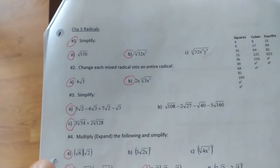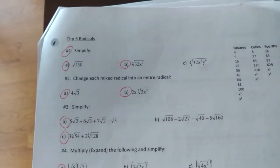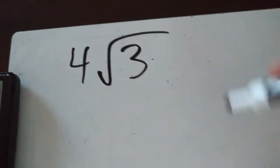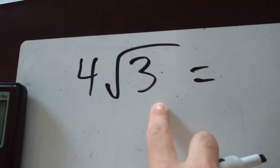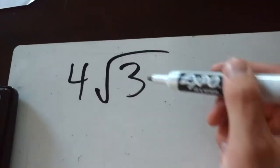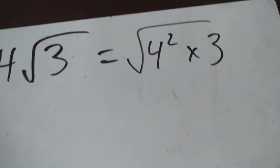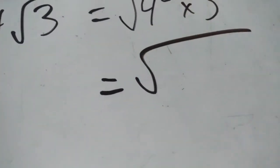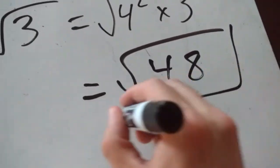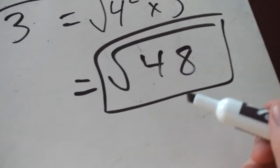Question 2a and 2b: change each mixed radical into an entire radical. If we have 4 times the square root of 3, just take the 4 and bring it underneath the root sign — but square it first, because it's a square root. So it becomes the square root of 4 squared times 3, which is the square root of 16 times 3, which is the square root of 48.